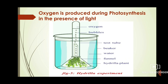All the bubbles from the hydrilla plant will collect at the top of the test tube. To confirm the presence of oxygen, take a matchstick and place it above the test tube — the matchstick will get lit. This proves that oxygen is produced during photosynthesis in the presence of light. Please study the materials required, procedure, observation, and diagram carefully for this activity.